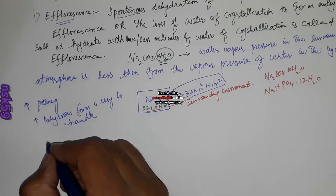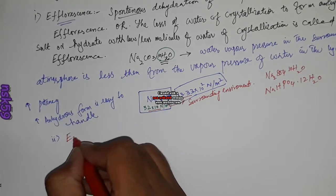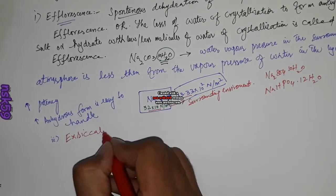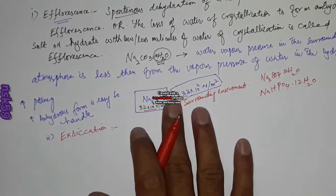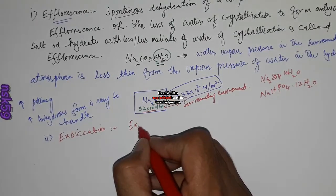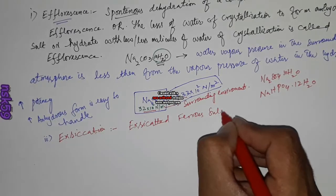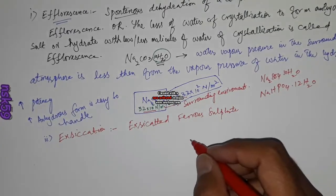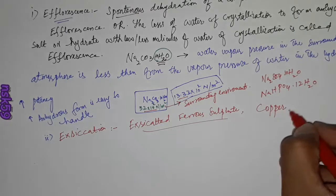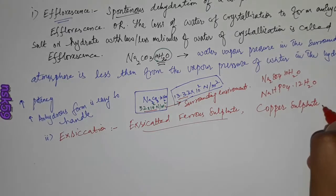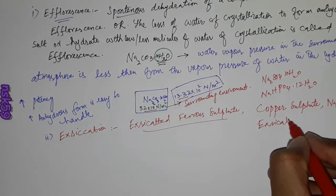An advanced stage of the efflorescence process is exsiccation. This is the same process through which we prepare an important anti-anemic salt — exsiccated ferrous sulfate — used in iron deficiency anemia. Copper sulfate and sodium carbonate may also be prepared by this process of exsiccation.